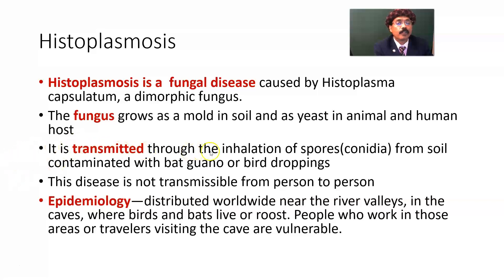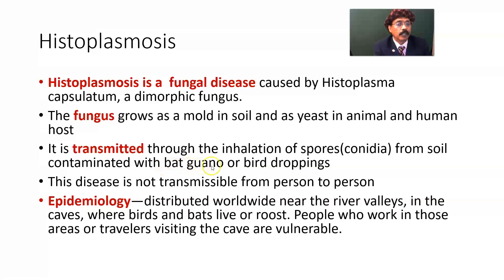It is transmitted through inhalation of spores — conidia — from soil contaminated with bat guano or bird droppings. Guano means the accumulation of bat waste, sea bird excreta, or any bird dropping. For example, a person who deals with chicken fertilizer may suffer from Histoplasmosis.